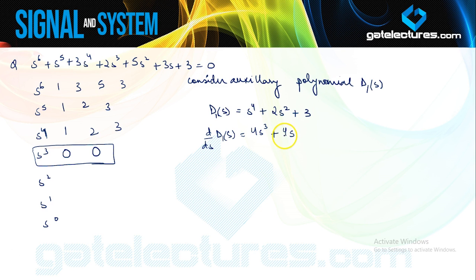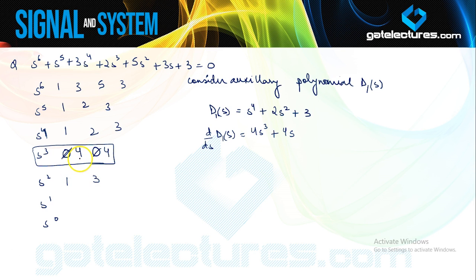Using the derivative 4S³ + 4S, we place coefficients 4 and 4 in the S³ row and continue the Routh array. Computing: (8−4)/4 = 1; (4×3)/4 = 3; then (4 − 12) = −8; then 0; and finally (−8×3)/(−8) = 3. There are 2 sign changes in the first column, so the system is unstable, with 2 roots in the right half of the S-plane.